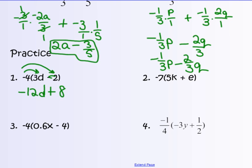Practice number 2: negative 7 times 5k gives negative 35k, and negative 7 times k gives negative 7k.